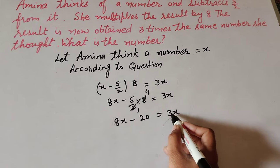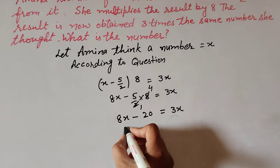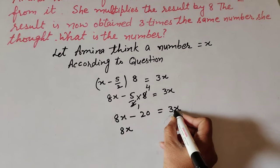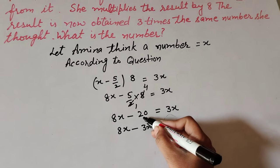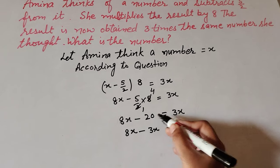3x to left hand side. So 8x, transposing 3x to left hand side gives minus 3x. And -20 transposing to right hand side becomes plus 20.